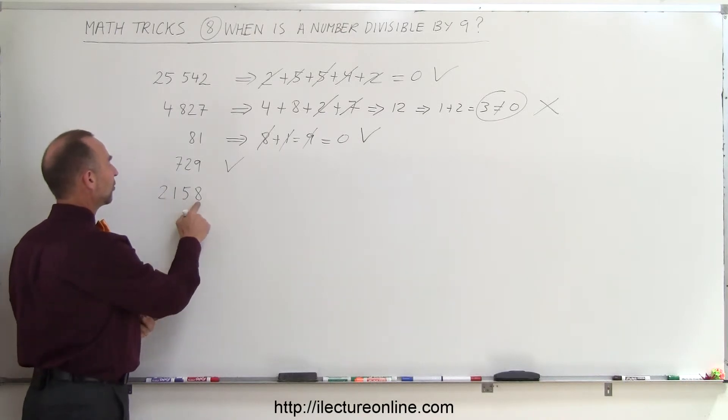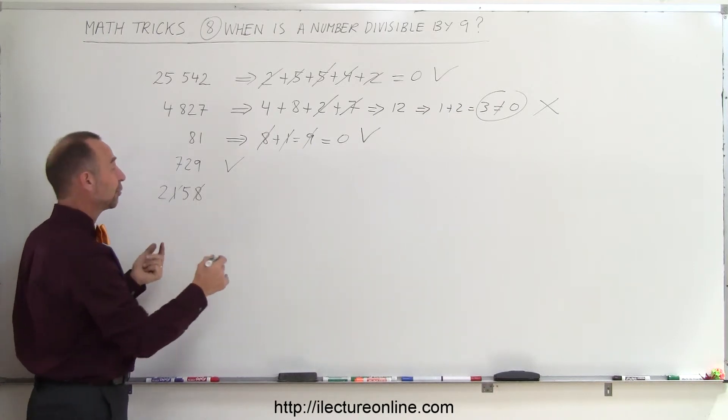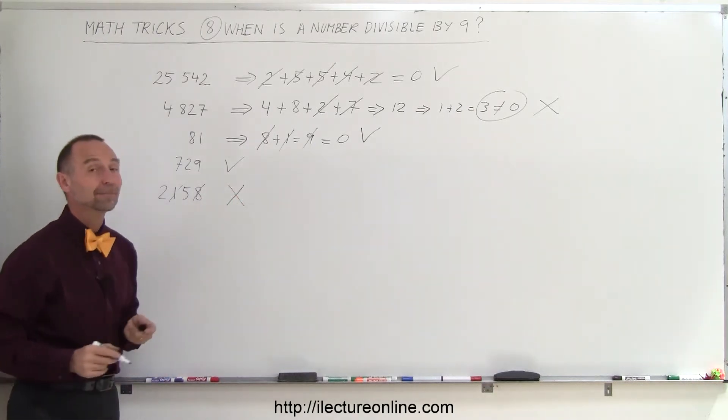How about here? 1 plus 8 is 9, so that cancels out. 2 plus 5 is 7, which is not equal to 9. Therefore, no, this is not divisible by 9.